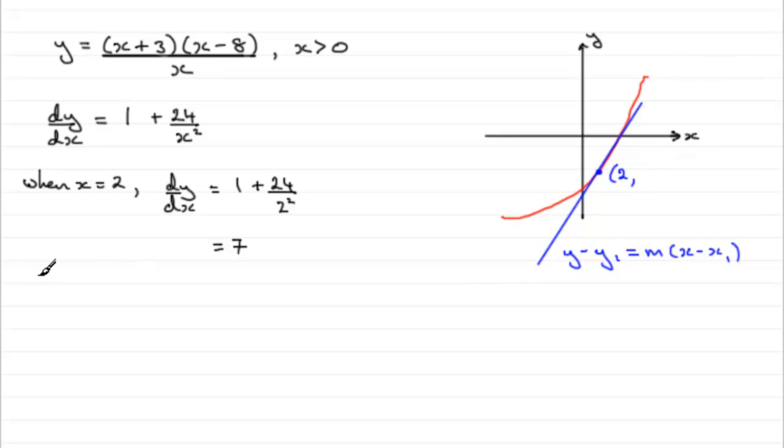We need to get the y coordinate here. So we can put when x is 2 back into here. So we can say also y is going to equal 2 plus 3, and then 2 minus 8 all over the x value underneath which is 2.